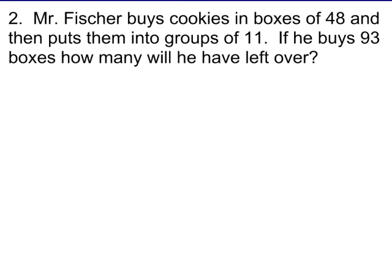Okay, the next one says, Mr. Fisher buys cookies in boxes of 48, and then puts them into groups of 11. If he buys 93 boxes, how many will he have left over? Well, this is one where you could do using straight arithmetic, meaning you just multiply 48 times 93, divide by 11, and get your remainder.